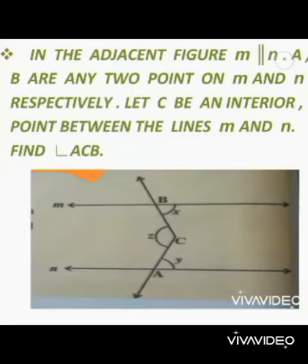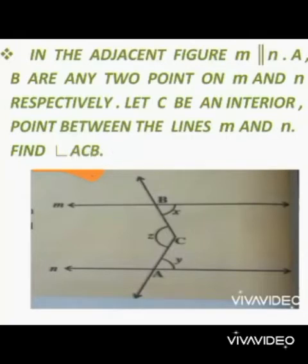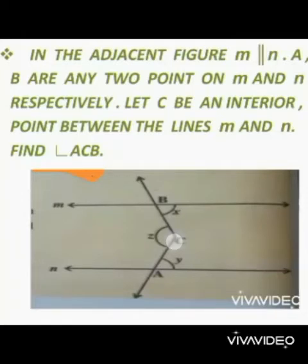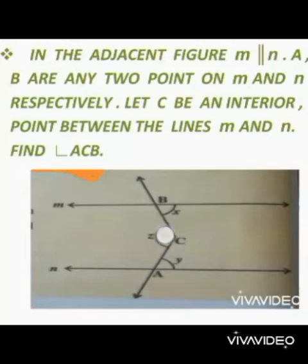Next sum: In the adjacent figure, M is parallel to N. A and B are any two points on line M and line N respectively. C is an interior point between the lines M and N. You have to find angle ACB. From the figure, line M is parallel to line N, C is the interior point between the two lines, and you have to find angle ACB — that is, angle Z.